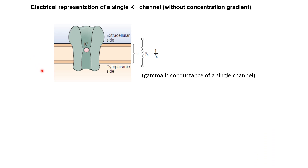Let's take another look at the electrical representation of an ion channel. Say this is a potassium channel embedded in the membrane — we are looking at one single protein molecule. This is the inner side, this is the outer side, and this is the protein molecule through which potassium ions can pass. This ion channel can be represented as a resistor and quantified in terms of its resistance RK or its conductance γK, where γK is 1 over RK. Either conductance or resistance can define this channel.